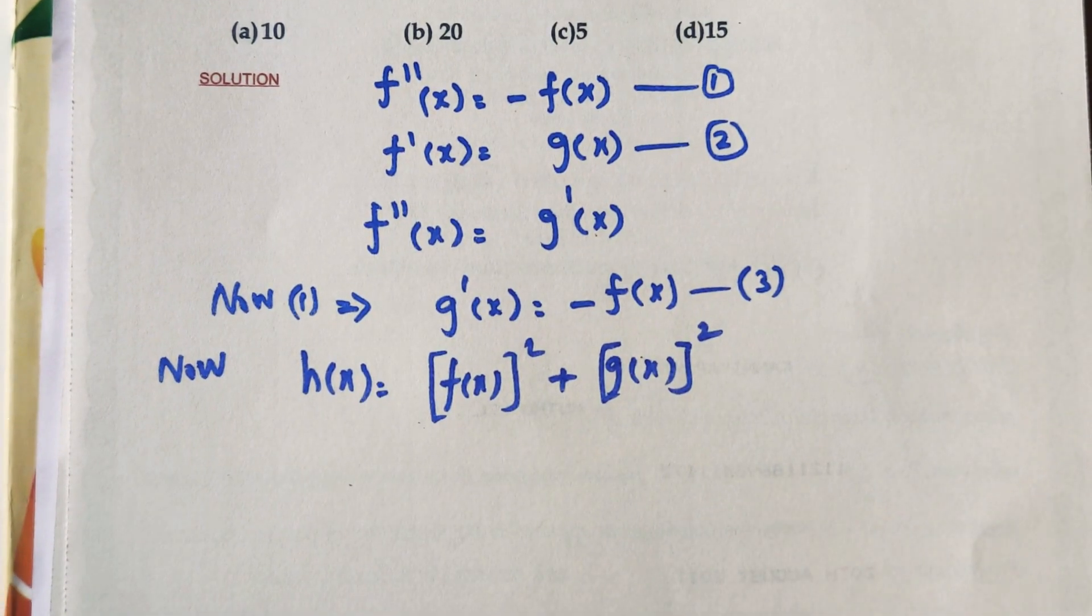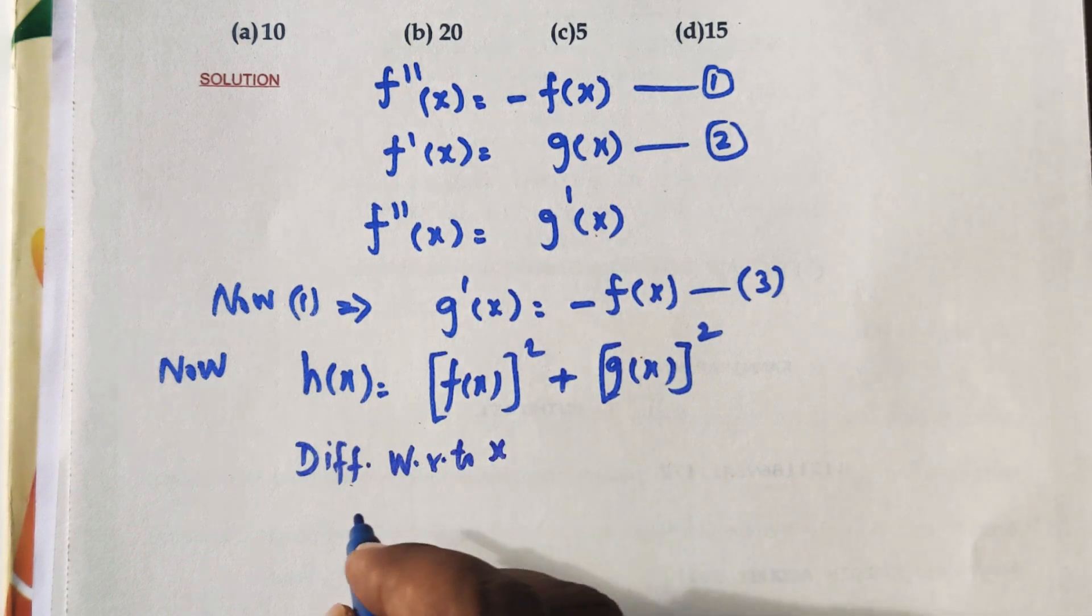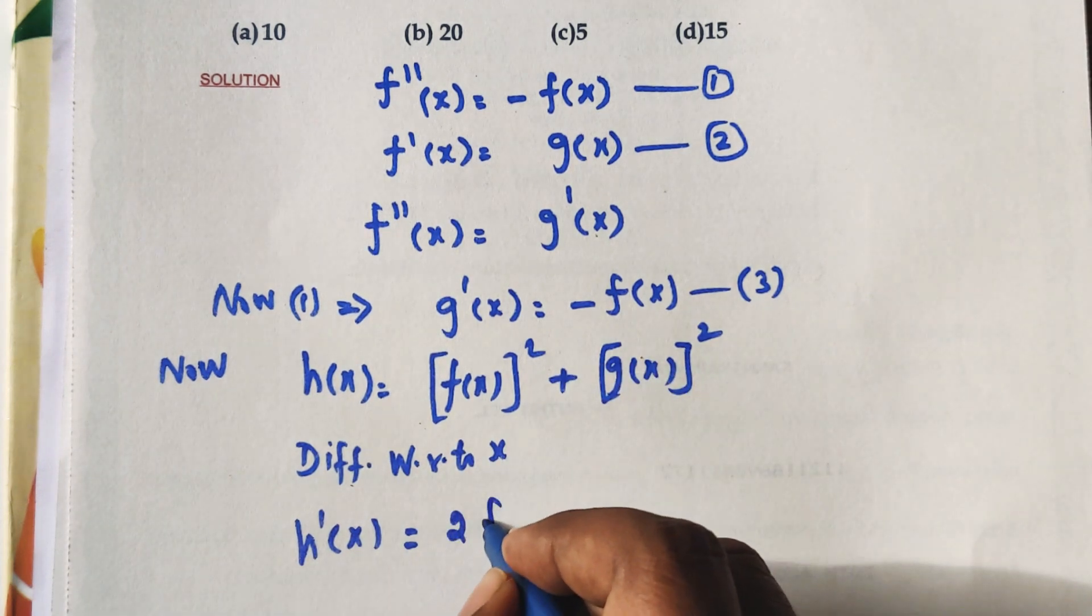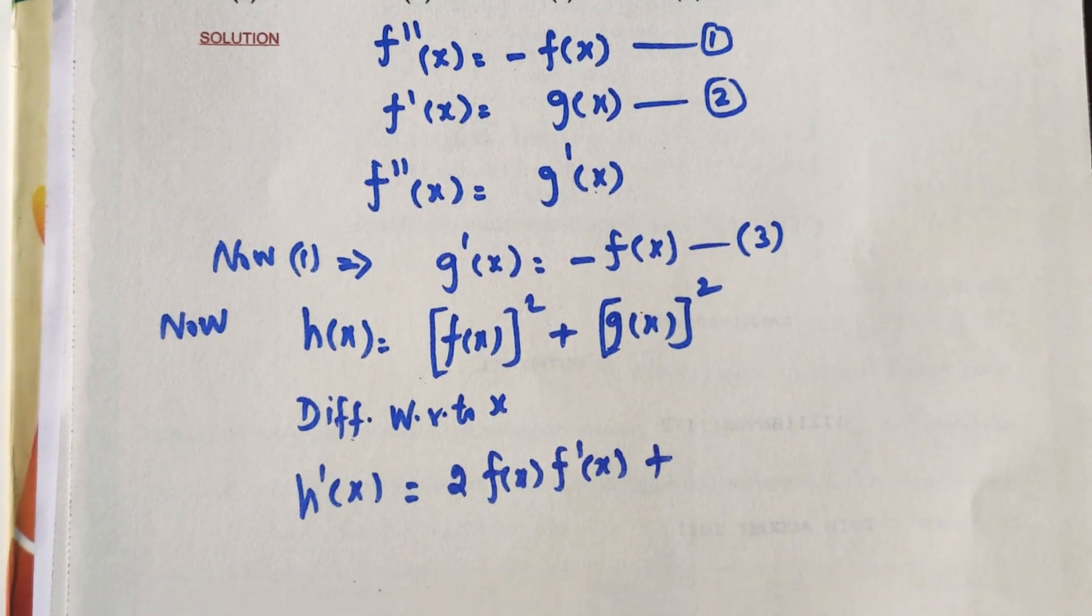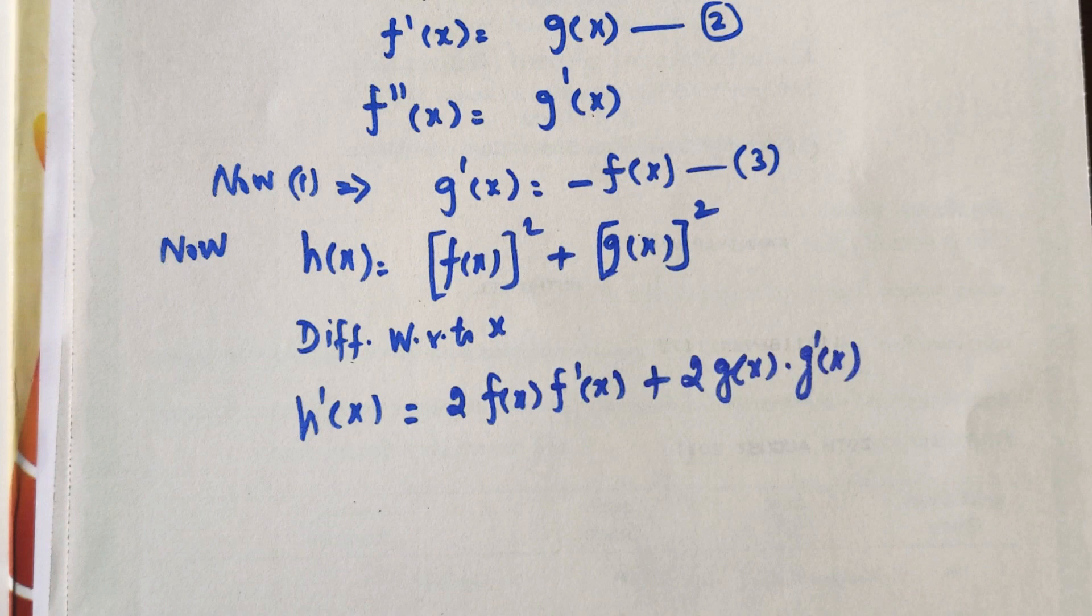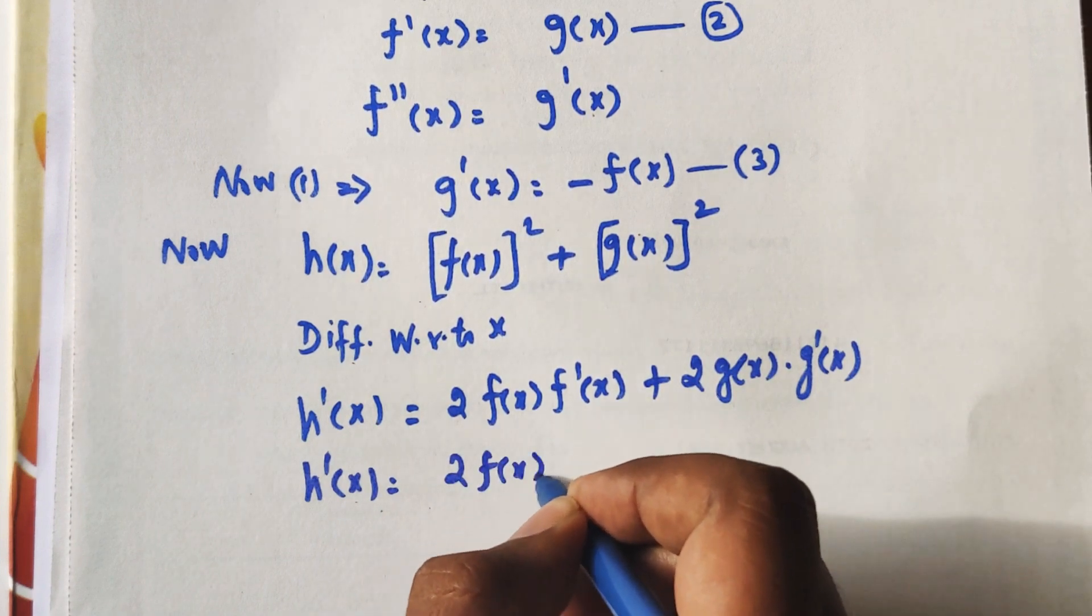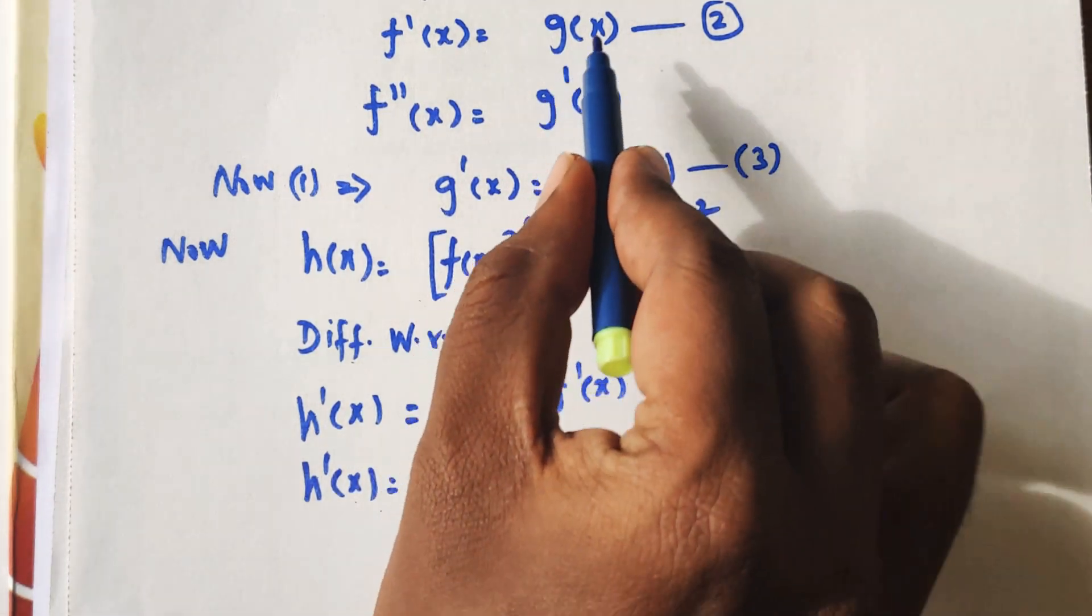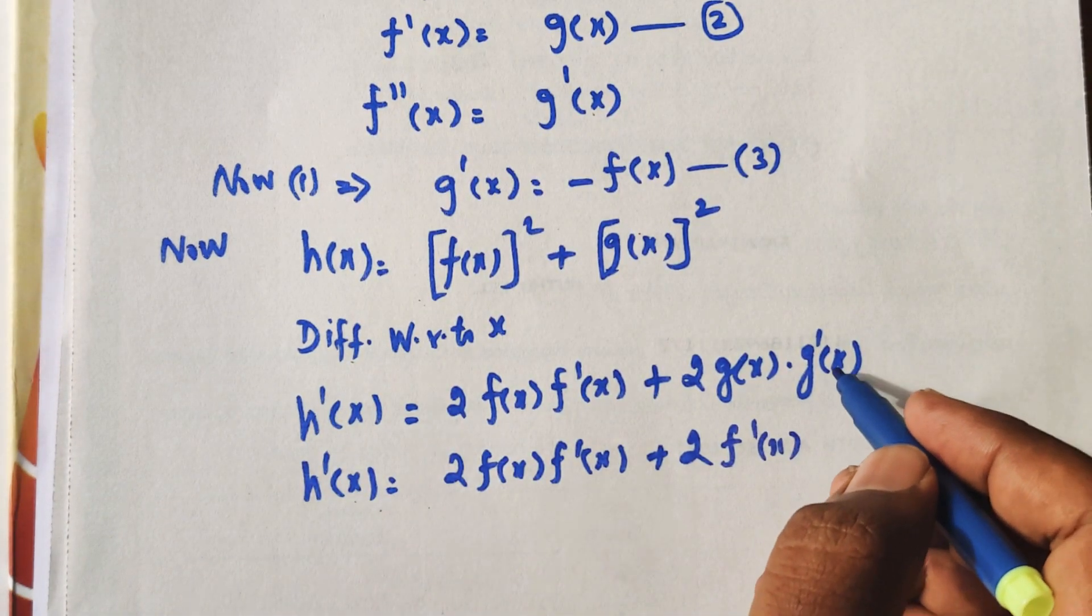Differentiate H of X with respect to X. H dash X equals 2 F of X times F dash of X plus 2 G of X times G dash of X.